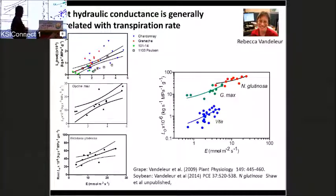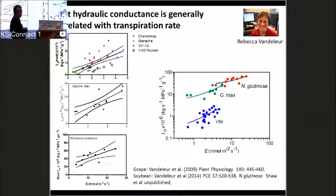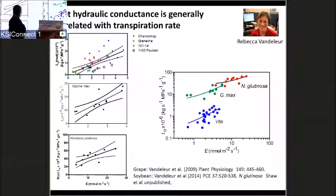When measuring plants grown in identical glasshouse conditions, we see an enormous range — tenfold or more — in root hydraulic conductance normalized to root system size. Rebecca found this variation was correlated with transpiration rate at the time of measurement, not root or shoot size. Across different genotypes — grapevine varieties, soybean, and tobacco — the more herbaceous species line up on the same relationship. The woody grapevine root system has much lower overall conductance, with an intercept near zero: if transpiration is low, there's virtually no root conductance.